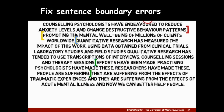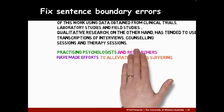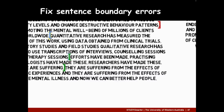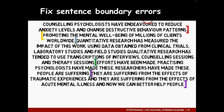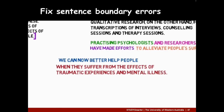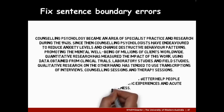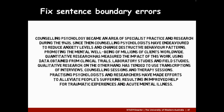The next group are choppy sentences. An easy way to fix choppy sentences is to combine ideas together. The final type is a stringy sentence — one that uses the coordinating conjunction 'and' too many times. An easy way to fix stringy sentences is to combine them using a subordinating conjunction like 'when', or a relative pronoun like 'who'. If you fix sentence boundary errors, your writing will be much easier to read.